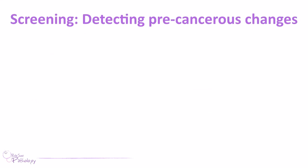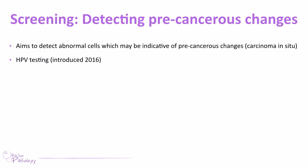To detect cervical cancer before it develops, we have the National Cervical Cancer Screening Programme in the UK. This aims not only to detect cervical cancers but to detect abnormal cells indicative of pre-cancerous changes — what we call carcinoma in situ, or cervical intraepithelial neoplasia (CIN). Routine HPV testing has also been introduced as part of this programme.